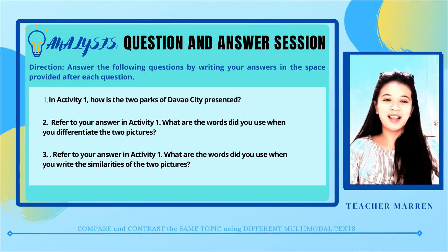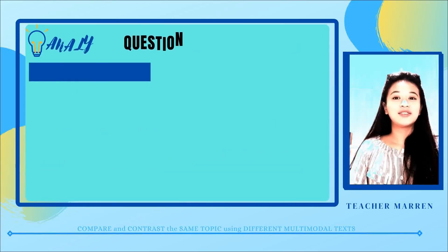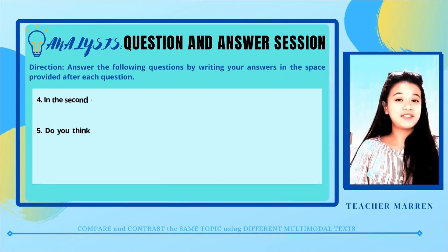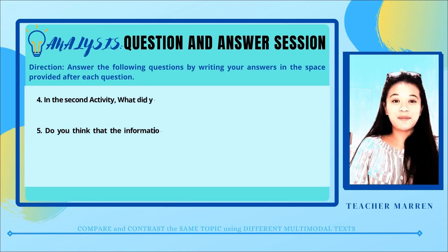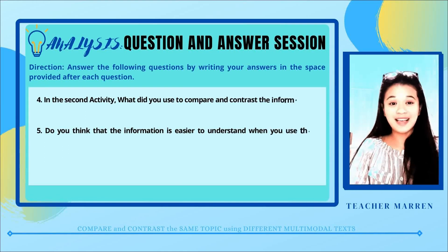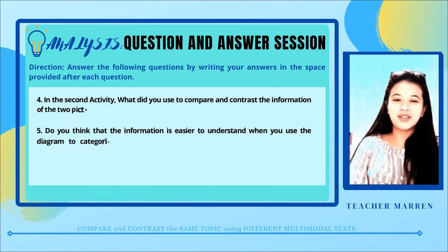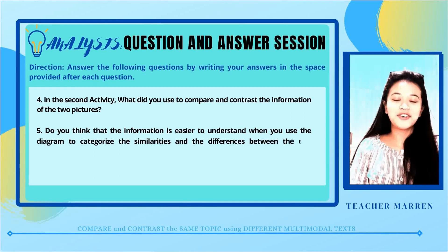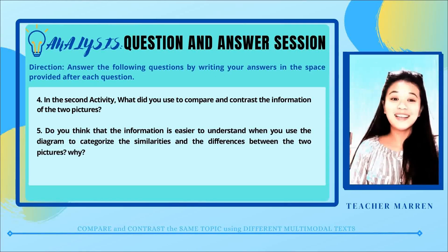The fourth question: in Activity 2, what did you use to compare and contrast the information of the two pictures? And for the last question: do you think the information is easier to understand when you use a diagram to categorize the similarities and differences between the pictures, and why? Answer all of those questions.